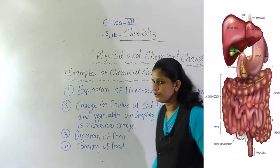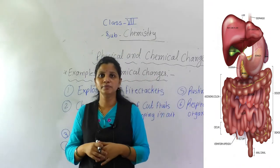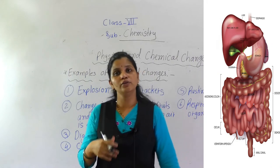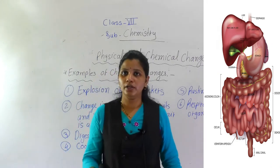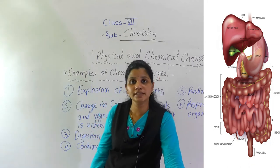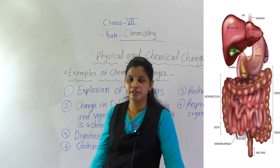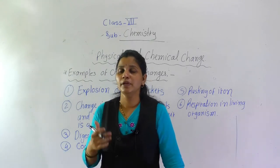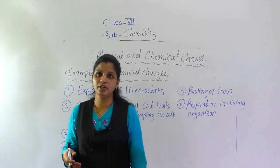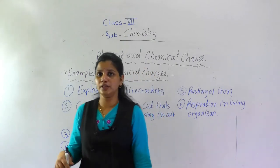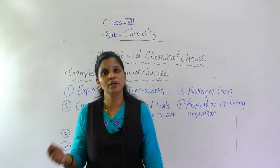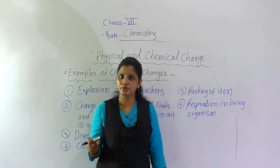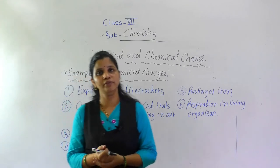The next example is digestion of food — here a diagram is given. Whatever we eat every day is digested in our stomach. In that also, chemical reactions occur. In our stomach, hydrochloric acid (HCl) is present, which helps to digest our food. Some enzymes are also present in our body. You will learn about the digestive system in biology. So in digestion, chemical reactions occur, and our body absorbs the vitamins and minerals it needs. This is also one type of example of chemical change.